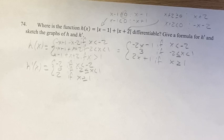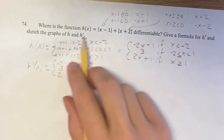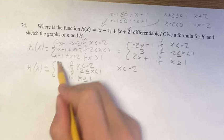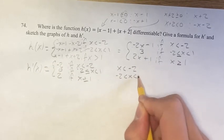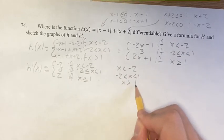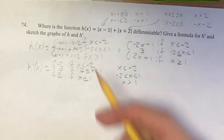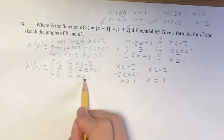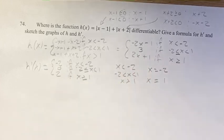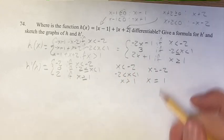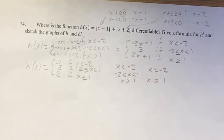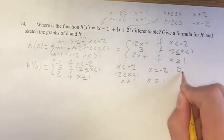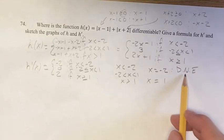The function is differentiable where the derivative exists. When x is less than negative 2, the derivative is negative 2. When negative 2 is less than x is less than 1, it's 0. When x is greater than 1, it's 2. But at x equals negative 2, the derivative approaches negative 2 from the left and 0 from the right — those are different values, so the derivative does not exist there.